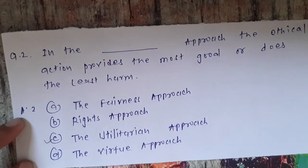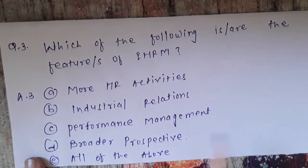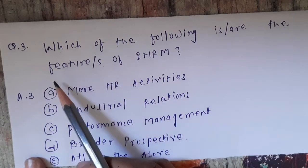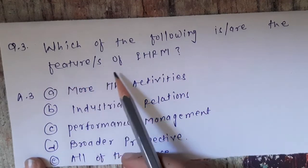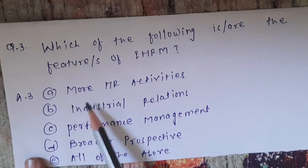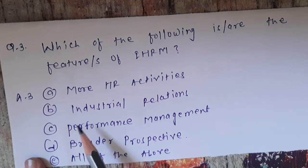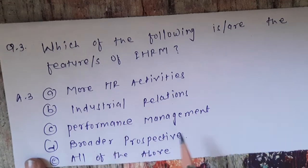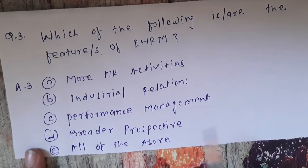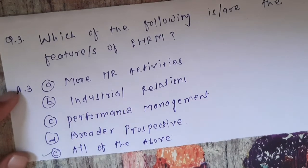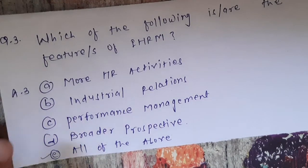Question number three: which of the following is or are the feature or features of IHMR? Options are: A) more HR activities, B) industrial relations, C) performance management, D) broader perspective, or E) all of the above. The correct answer is option E, all of the above.